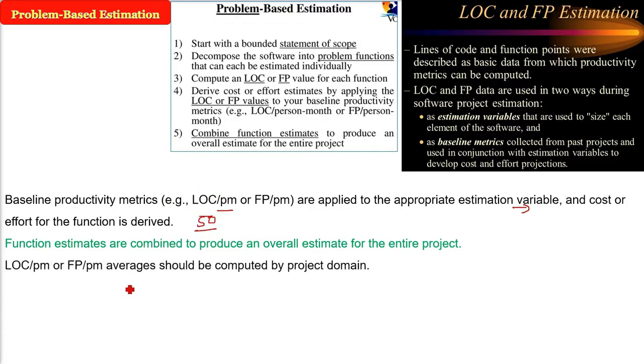For example, 50 FPs are there. We will do it all for these 50 and combine them. This LOC and FP, when we take the average, it should be computed by project domain.